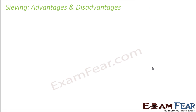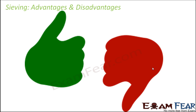Sieving has its own advantages and disadvantages. The advantage is that it is effective to separate tiny particles — for example, when removing impurities from flour. Doing it manually could be a tedious job because the particles are so tiny that it is very difficult to see if some undesirable component is present.